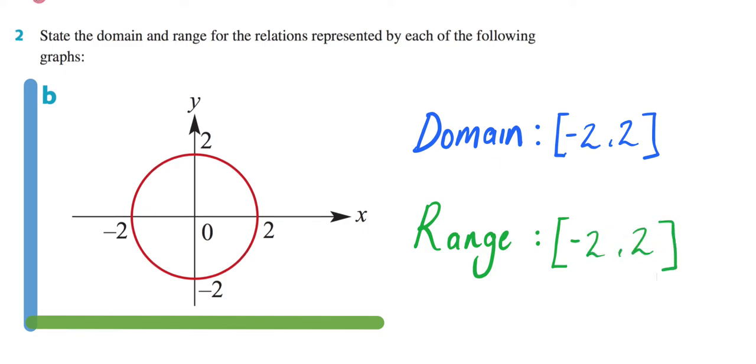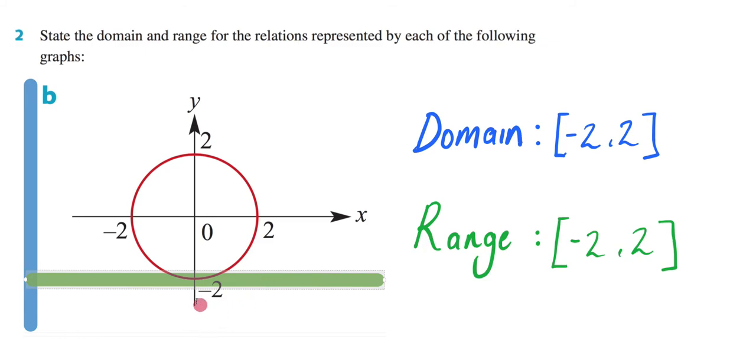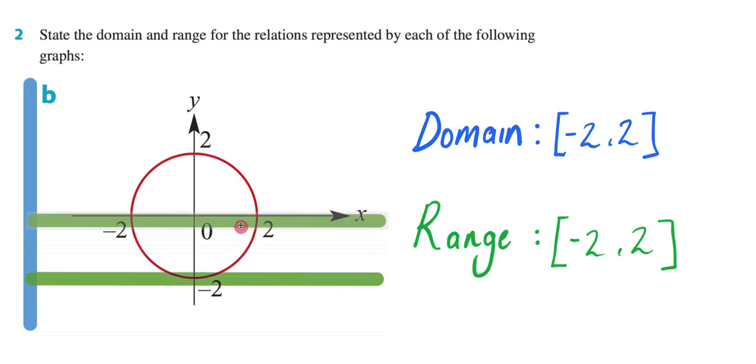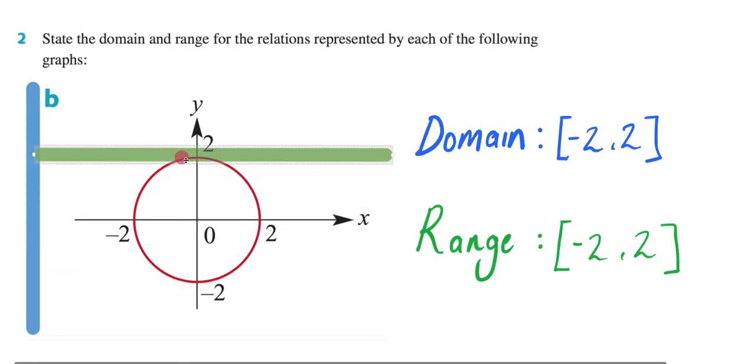And we could once again use this time a horizontal line to prove this. So here I'm not touching the line and the first time I touch my relation is going to be y equals negative 2 and then I sweep it all the way up and the last place I touch it is y equals 2. So therefore my range is negative 2 to 2.